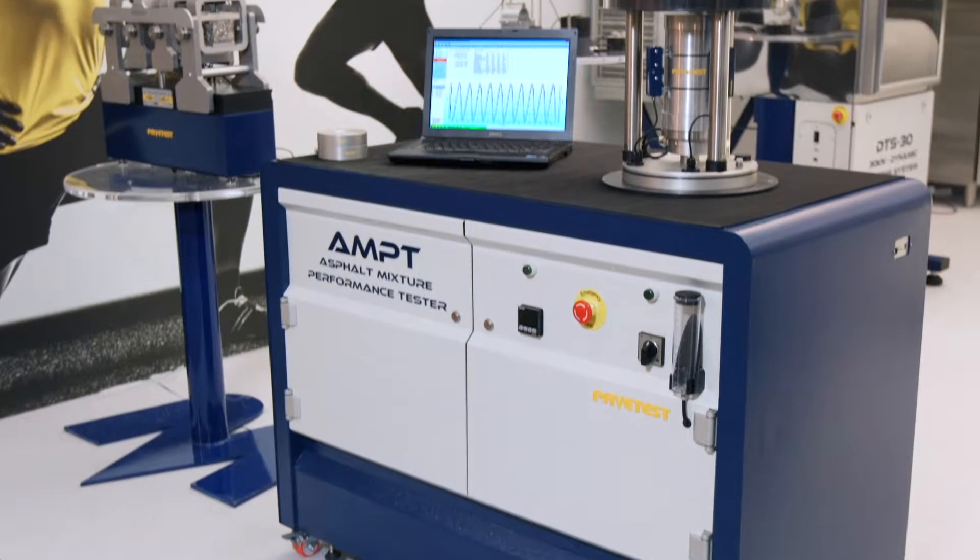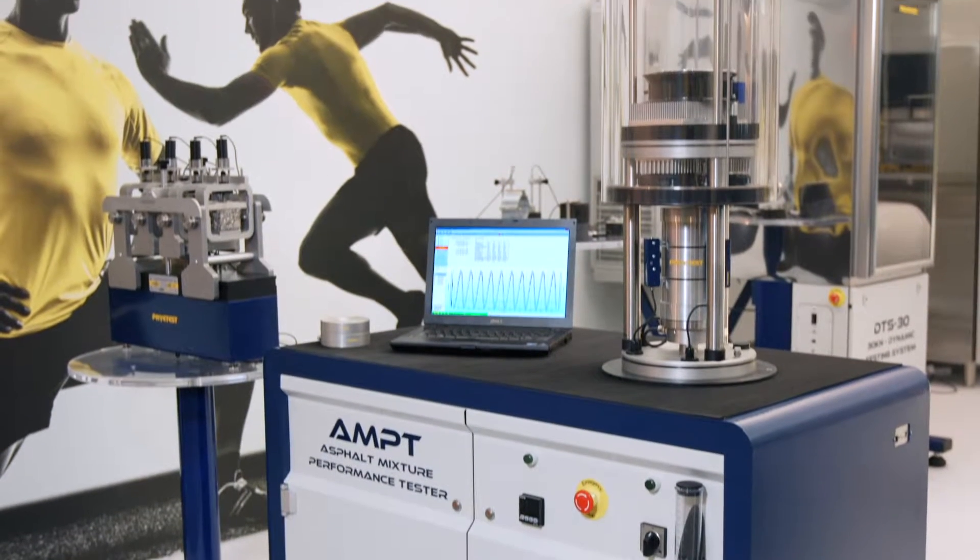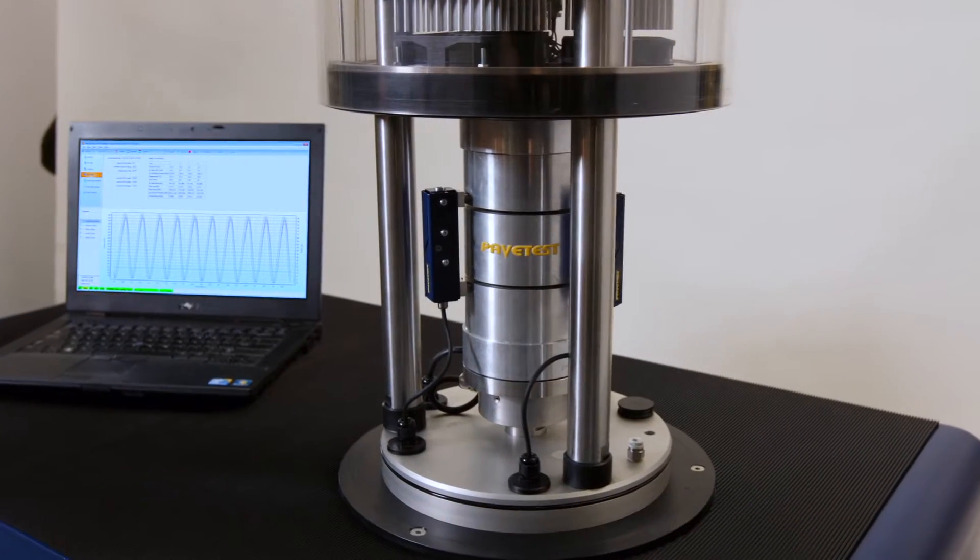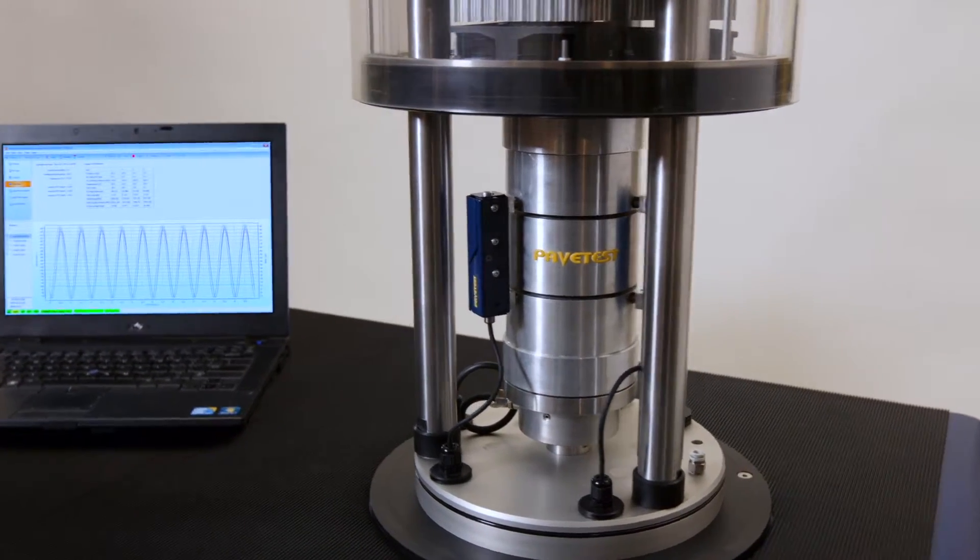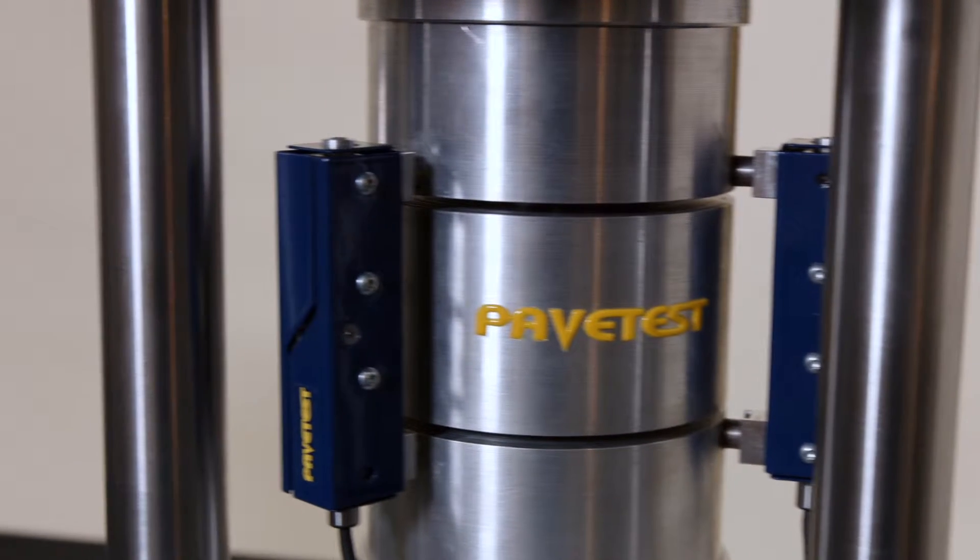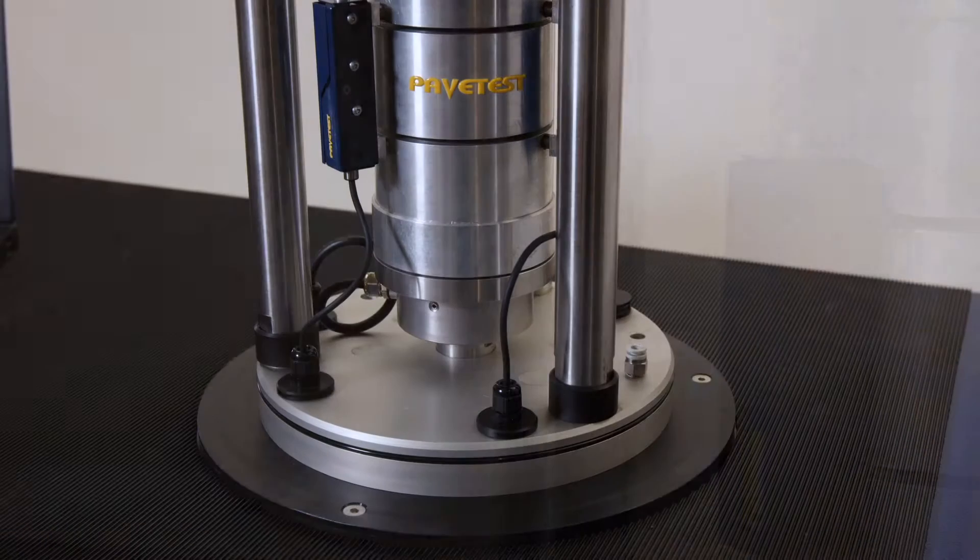The Asphalt Mixture Performance Tester, or AMPT, is a versatile low-cost computer-controlled hydraulic testing machine designed to provide researchers and engineers with the means of conducting a range of performance tests in the easiest possible way.